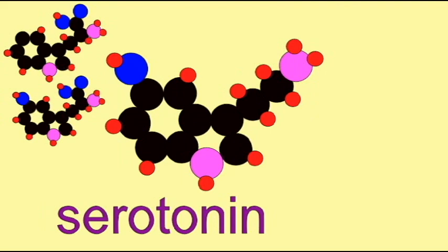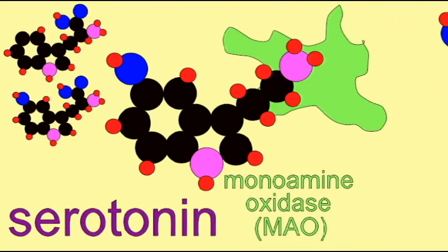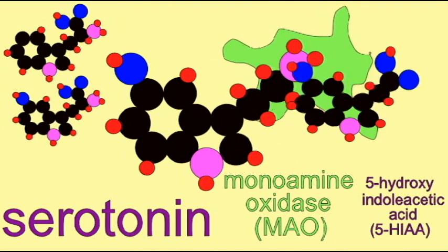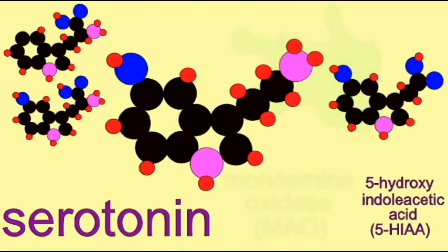The enzyme monoamine oxidase A can convert serotonin into a byproduct, 5-hydroxyindoleacetic acid, or 5-HIAA. This is a way